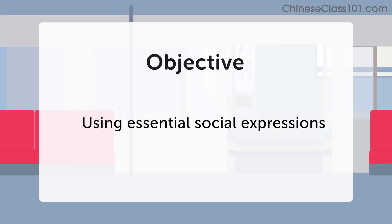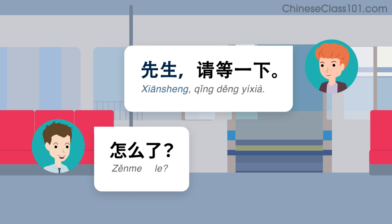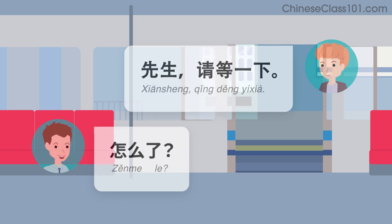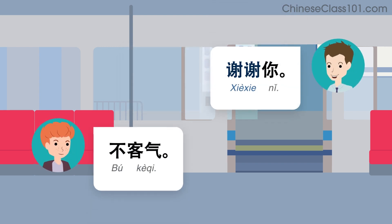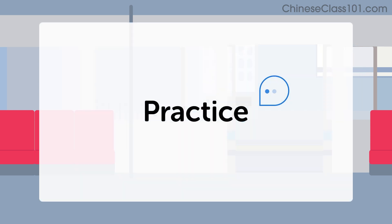In the next minute, you'll be challenged to use essential social expressions. First, let's look at some examples. 先生，请等一下。 怎么了？ 谢谢你。 不客气。 不好意思。 没事。 Let's practice.